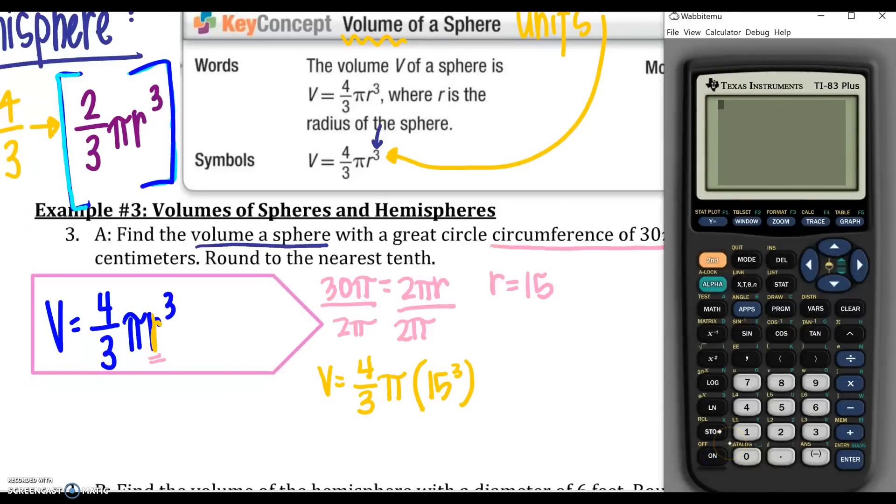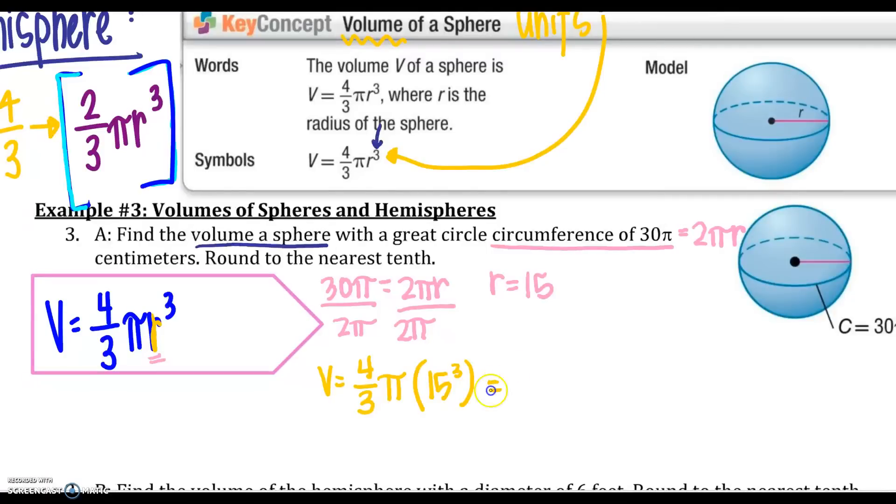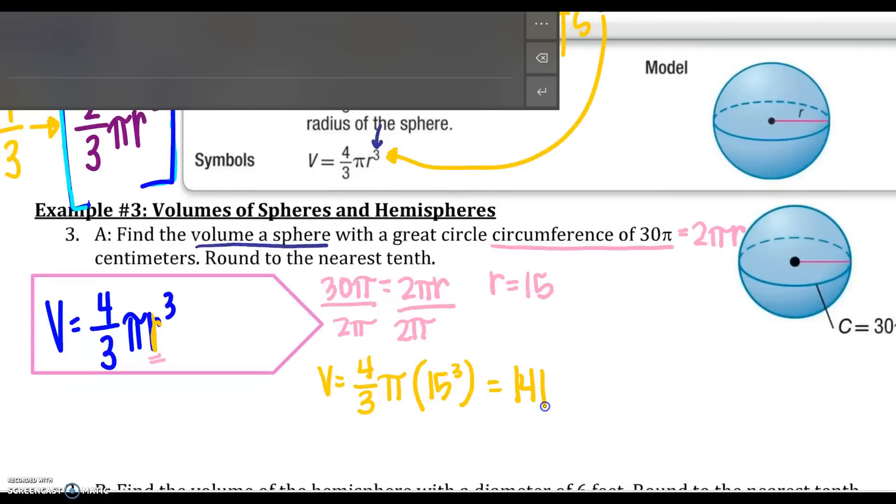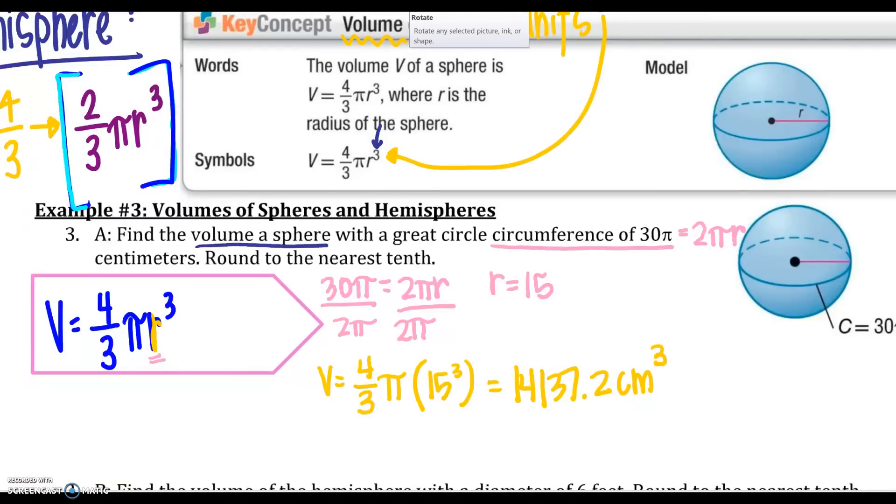So once I have that, how would Ms. House put this into your calculator? I would do 15 caret and then 3. That would give me my 15 cubed times π times. And I'm going to do 4/3 this way. You may have a different way to do it. That is totally fine. So my answer is 14,137.2 centimeters cubed. Those units need to be labeled correctly.